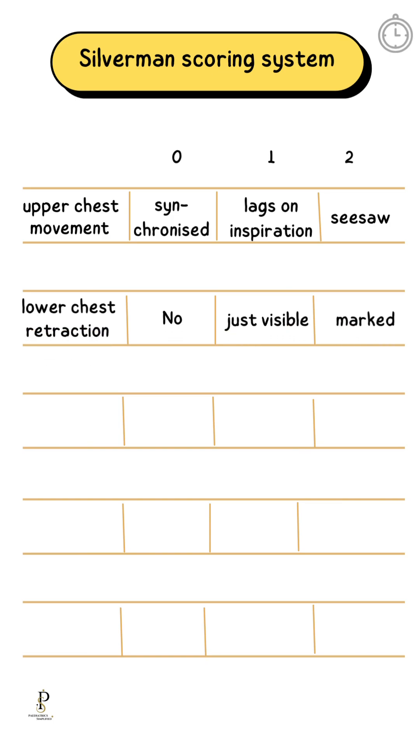Lower chest retraction: no retraction is grade 0; just visible is grade 1; marked retraction is grade 2.